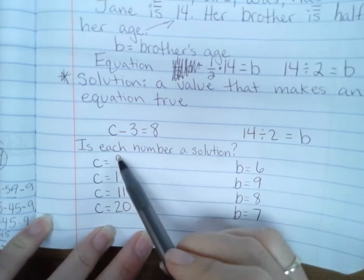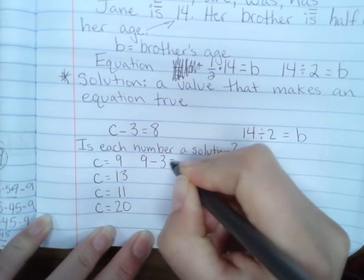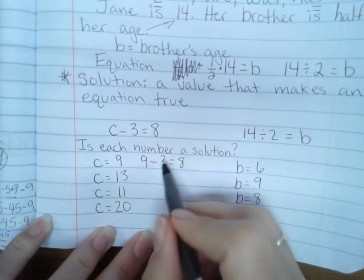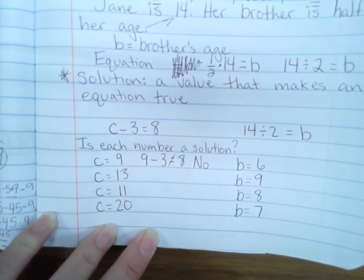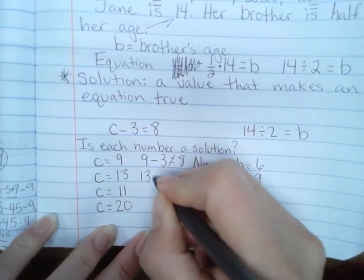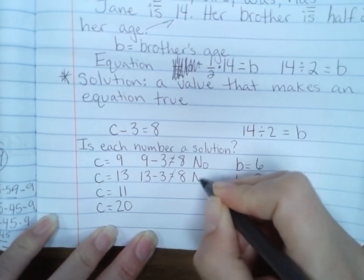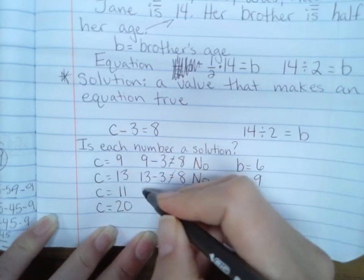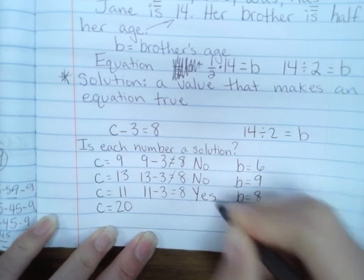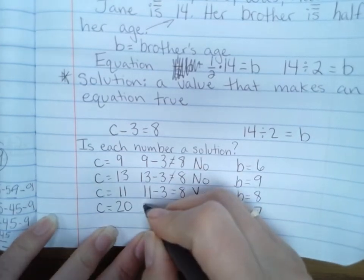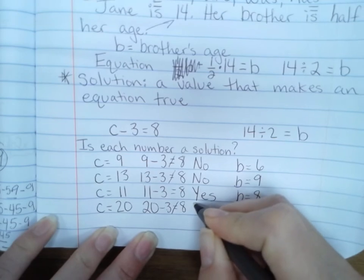Okay, how can you tell if something is a solution? Well, if I put it in here it has to be true. So nine minus three equals eight. Is nine a solution? Well, nine minus three is six. Six does not equal eight, so no, this is not a solution because that is not equal to that. Okay, let's try 13. 13 minus three equals eight. 13 minus three is ten. Ten does not equal eight, so no, that is not a solution. Put in 11. 11 minus three equals eight. That is true, so yes. 11 is the solution for this equation. Okay, try 20. 20 minus three equals eight. 20 minus three is 17. Those are not equal to each other, so it is not a solution.